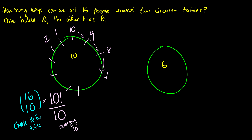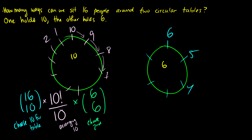Now we've done the first table. We choose 6 out of the remaining 6 people for the second table — that's 6 choose 6. Then we order those 6 people: there are 6 factorial ways, but we divide by 6 for the six possible rotations, giving 6 factorial over 6, which is 5 factorial.